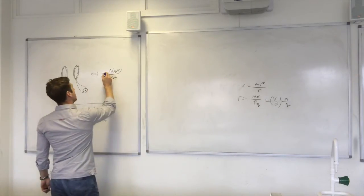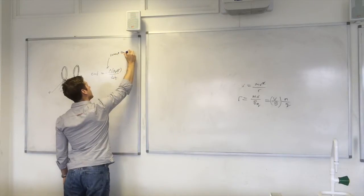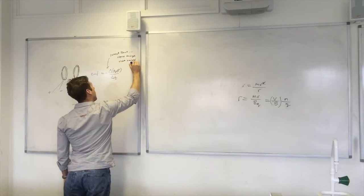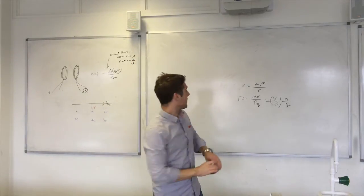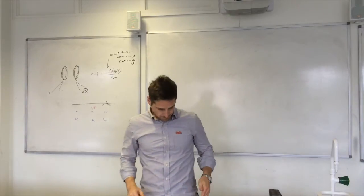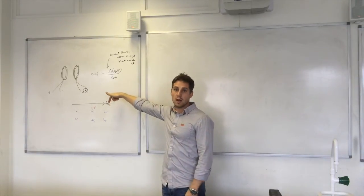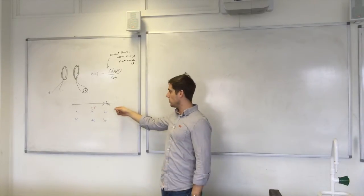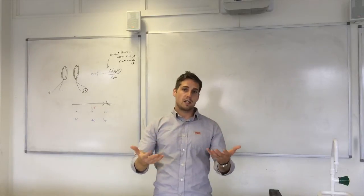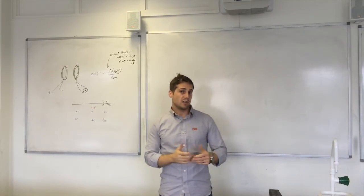Lenz's law means there is a negative sign: the induced EMF is equal to the negative rate of change of flux linkage. The current flows to oppose the change that caused it, and this is important because it conserves energy. If instead the force accelerated the wire, we'd be getting energy from nothing. Instead, we get a braking force that converts kinetic energy into another form — often heat.